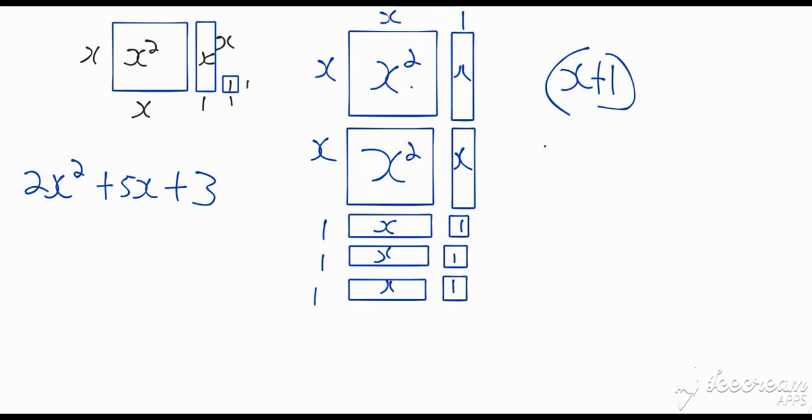And if I look at the side we have two x's, so that's 2x, and we have 1, 2, 3 units, so that's 2x + 3. So when I factorize 2x² + 5x + 3, I get (x + 1) into (2x + 3).